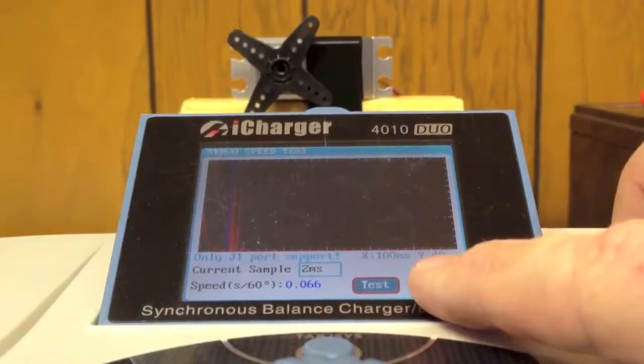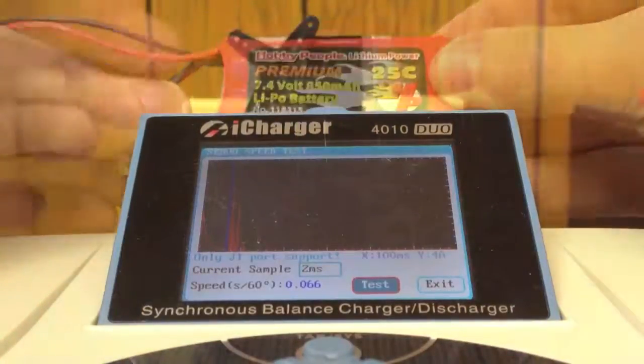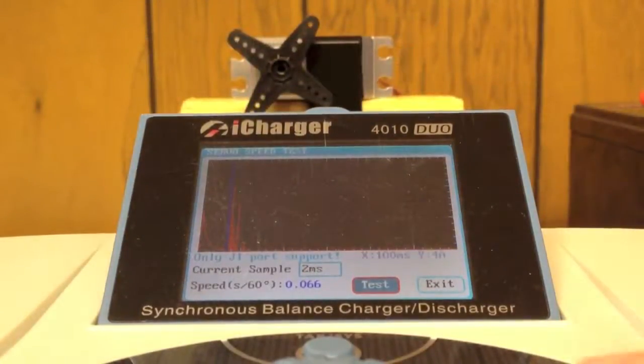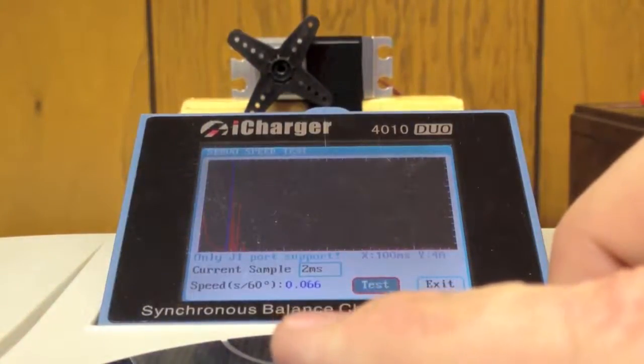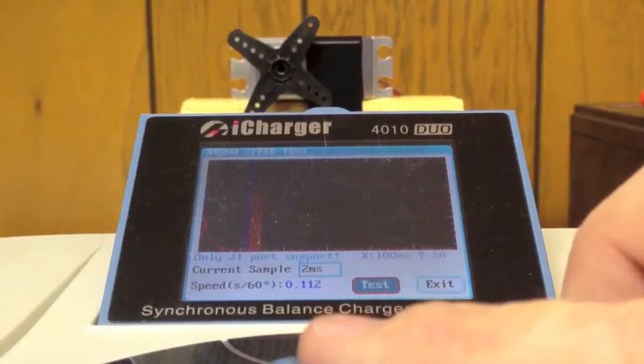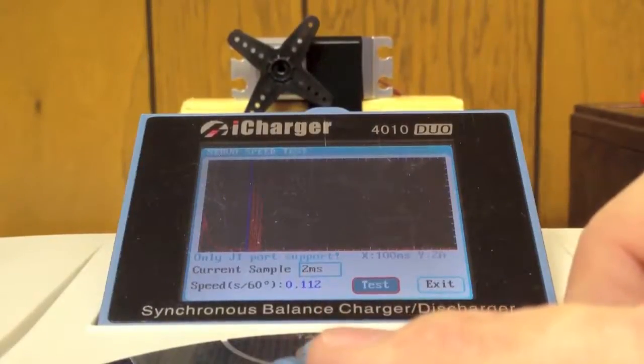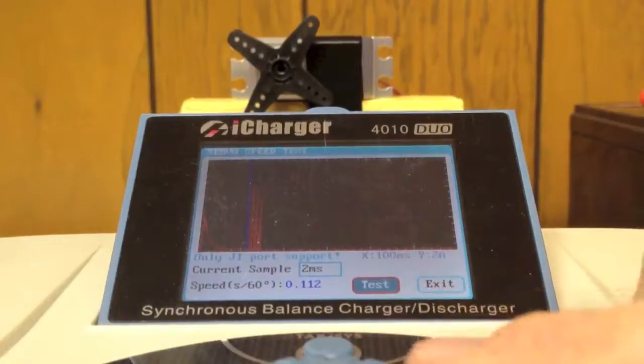This charger is saying that that servo can pull 4 amps. Now what I'm going to do next is simply unplug my LiPo battery from J port 2 on the side of the charger, and here is the little battery that I was using. I'm going to now run the same test with this high voltage servo at 5 volts. Here we go. And you can see that our speed has slowed down drastically, but also this is showing that it expects this servo can pull about 2 amps.